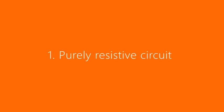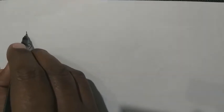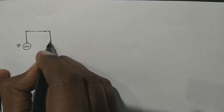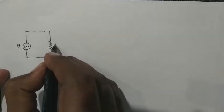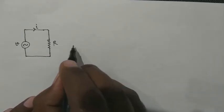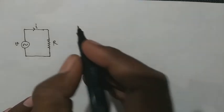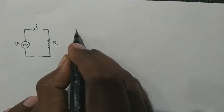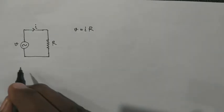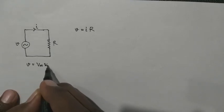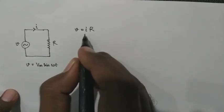Let us start with today's topic. If we have a single phase AC circuit which contains a voltage source V and only a pure resistance, a circuit current will flow across the resistor and we can draw the waveform.